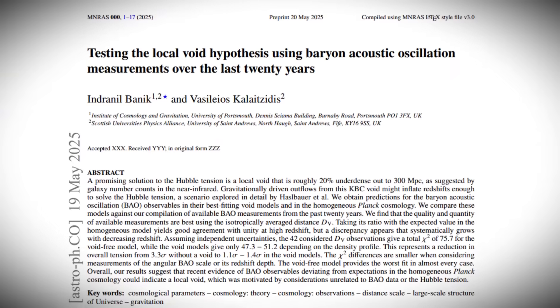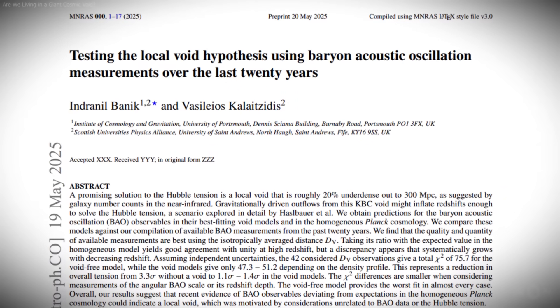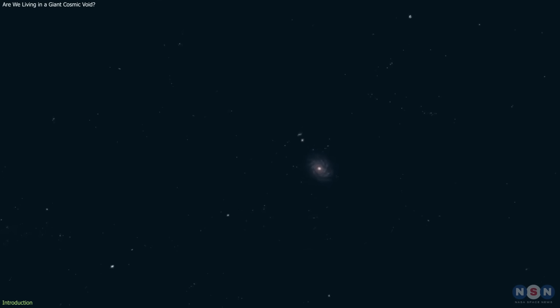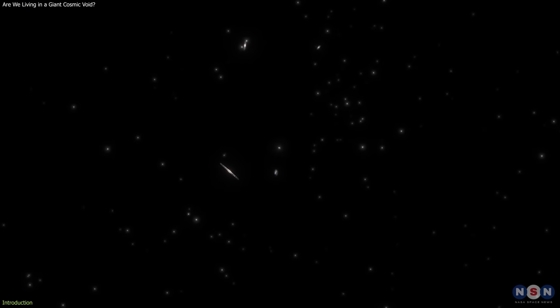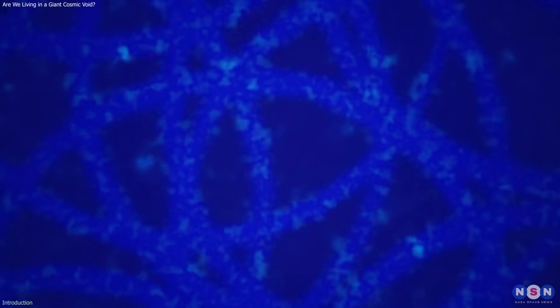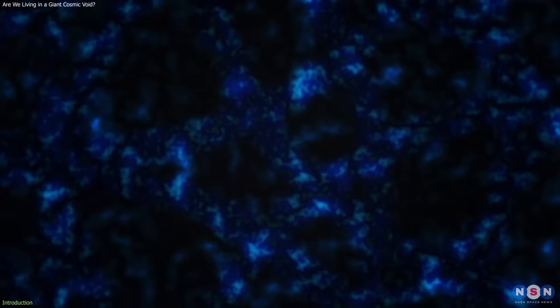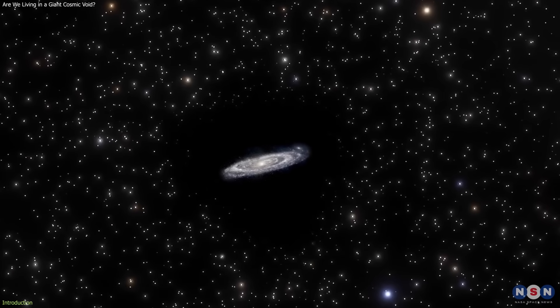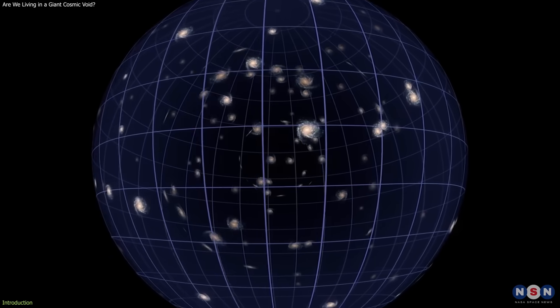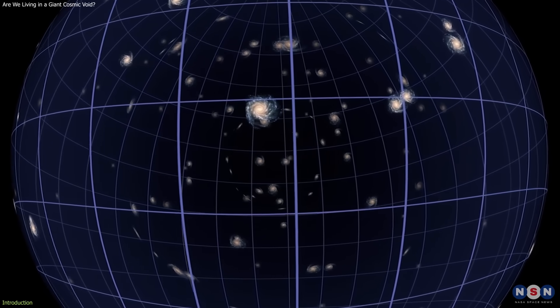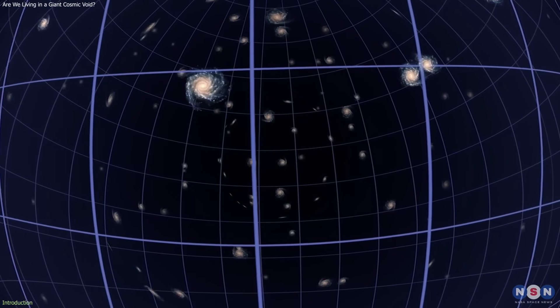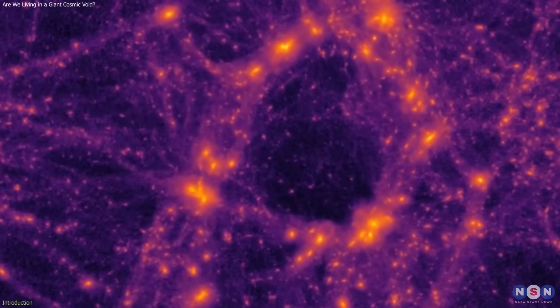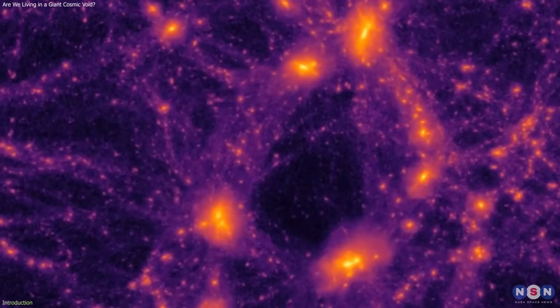A new cosmology study is adding weight to an unusual idea. Our galaxy may sit inside a large cosmic void, a region of space with fewer galaxies than average. By analyzing subtle distortions in ancient sound patterns from the early universe, researchers found evidence that this local under-density could help explain why nearby measurements of cosmic expansion appear faster than expected. The findings don't rely on new physics, but instead on how large-scale structure affects what we observe.